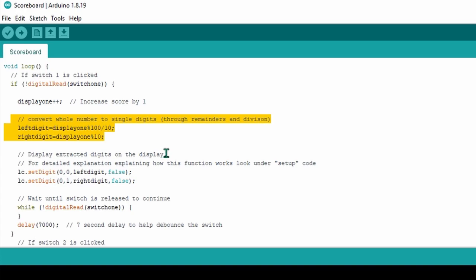I hope that clarifies how the code is able to split the score into two digits because this is probably the most important part of the code. After the score has been split into two separate digits, those digits are sent to the dual 7-segment display to be displayed.